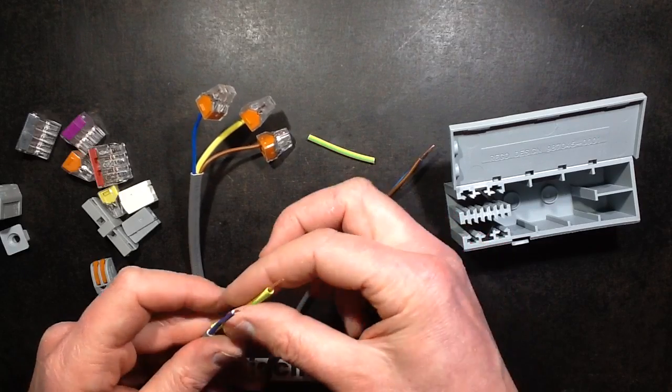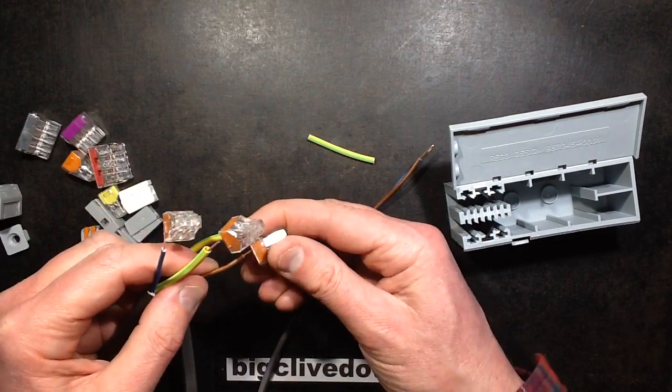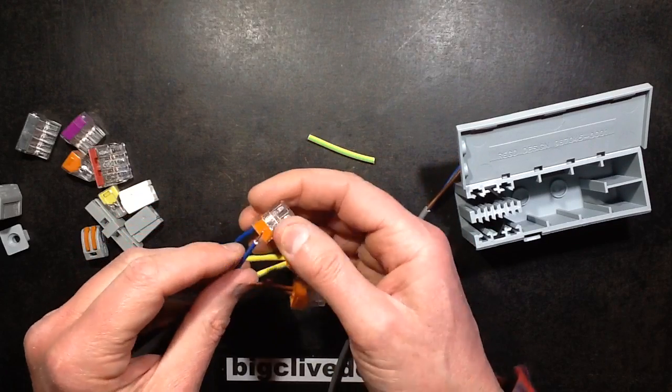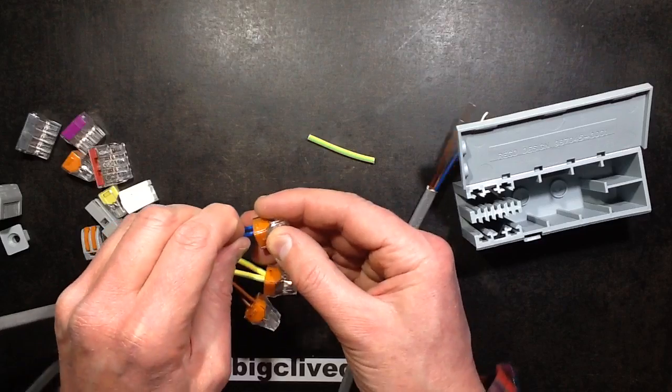Get the next wire, pop the earth sleeving on, and just do the same again: live, earth, neutral.